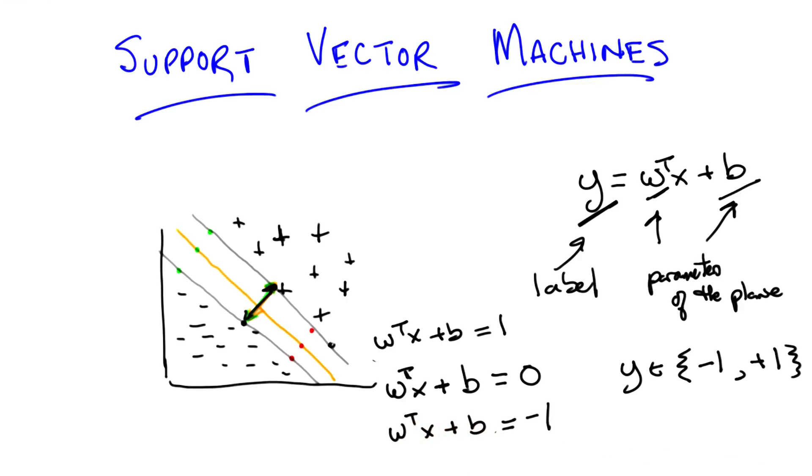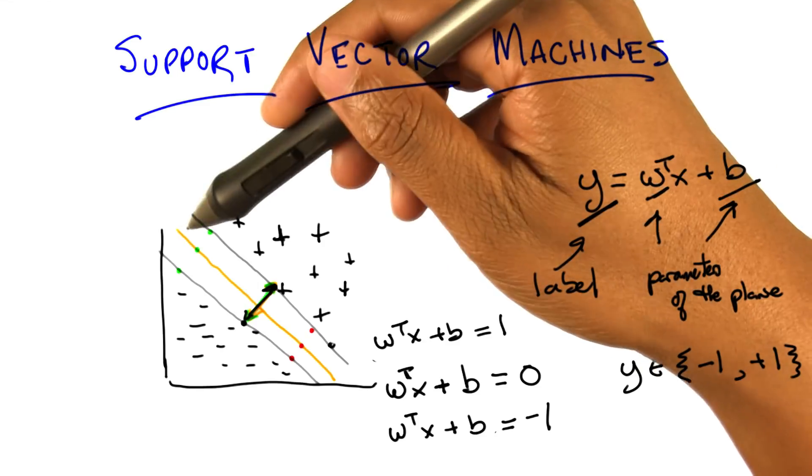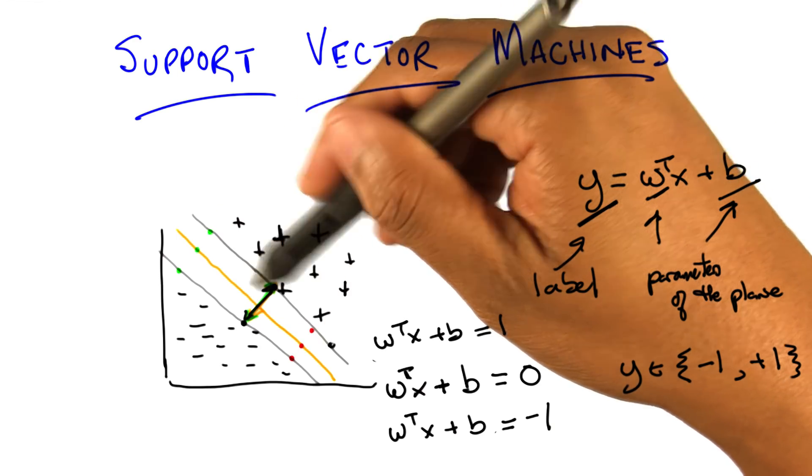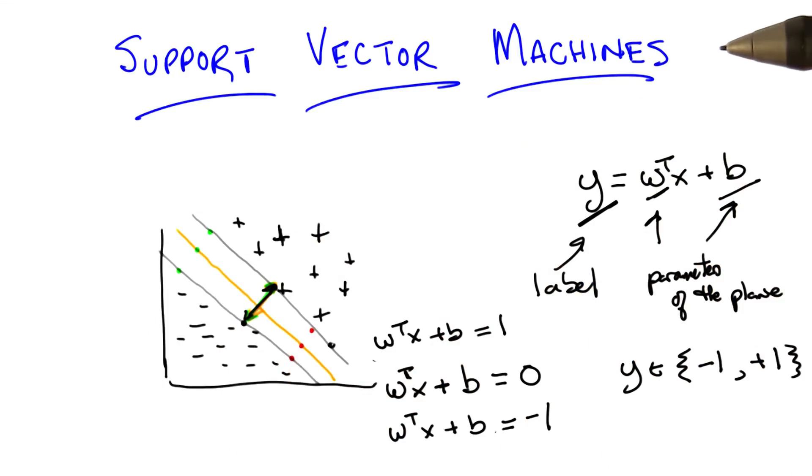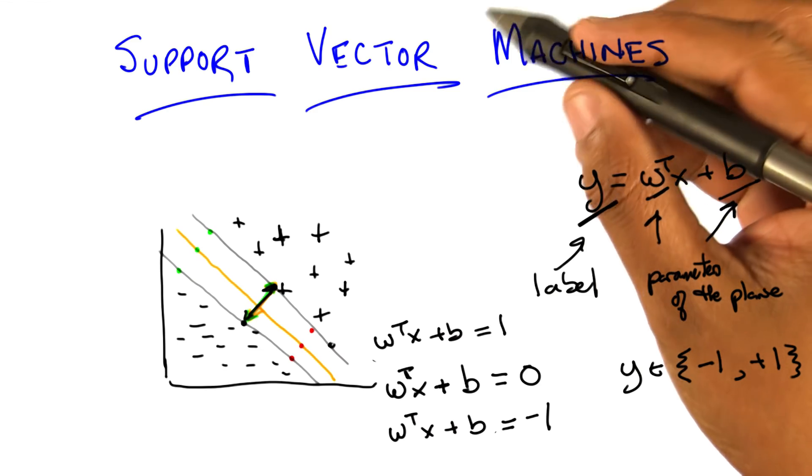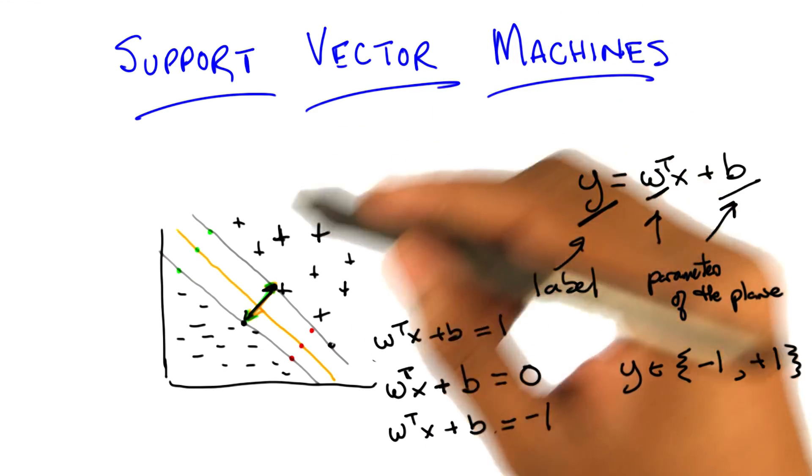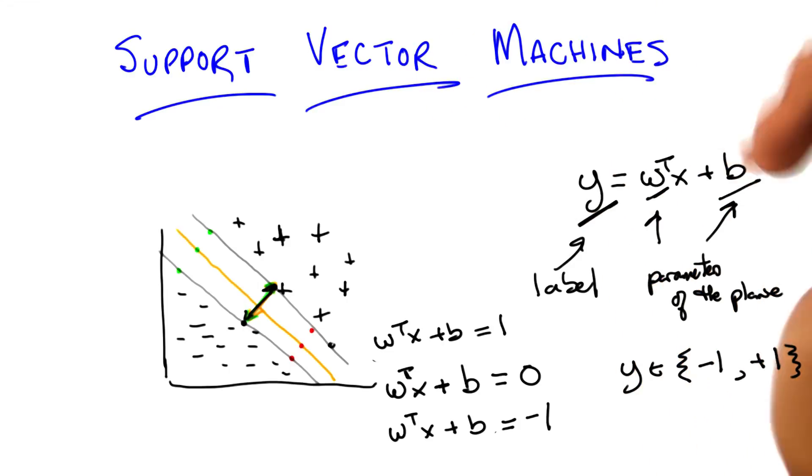So we have the decision boundary we're looking at, and we know that the equation of the line is w transpose x plus b is 0. We know that if we slid that line towards the positive values, we would end up with w transpose x plus b equals 1. And if we slid it towards the negative values, we'd end up with w transpose x plus b equals minus 1. Now we can ask ourselves, how does this help us? And it helps us in a very simple way. We know that we want the boundary condition line, the one that is actually our decision boundary, to be as far as possible from both the positives and the negative examples.